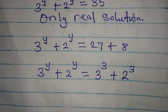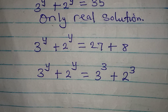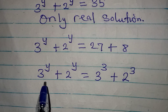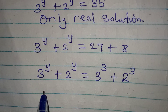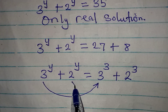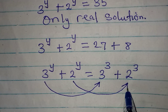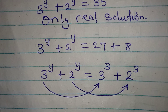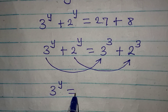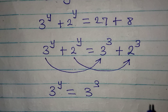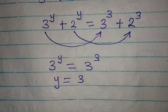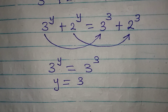Now this is understandable. We are going to compare what we have here. If we have 3 to the power of y, we compare this to 3 to the power of 3. We can say that 3 to the power of y is equal to 3 to the power of 3, and since the bases are the same, y is equal to 3.